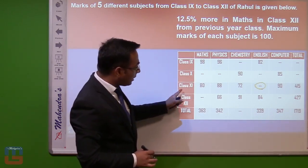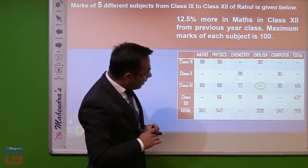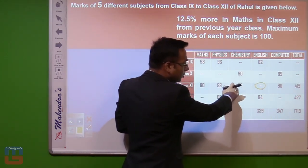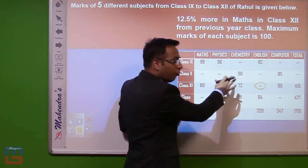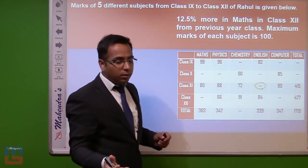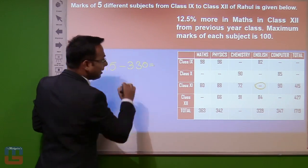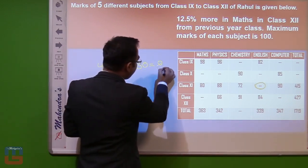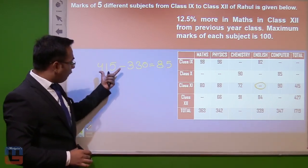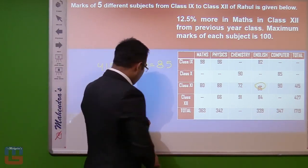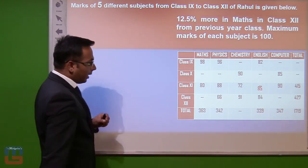The marks of English in class 11 are missing. We add the rest of the known marks: 80, 80, 80, and 90. Three 80s make 240, plus 90 gives 330. We subtract 330 from the class 11 total of 415: 415 minus 330 equals 85. So the marks of English in class 11 are 85.